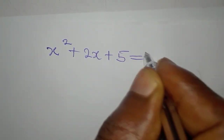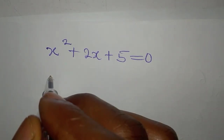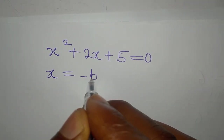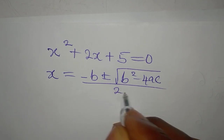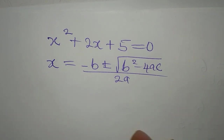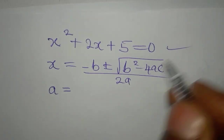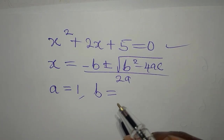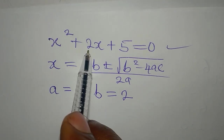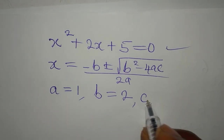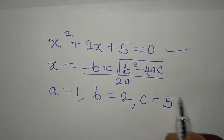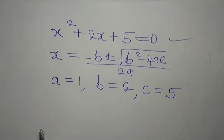For x squared plus 2x plus 5 equals 0, we'll use the quadratic formula: x equals negative b plus or minus the square root of b squared minus 4ac, all over 2a. Here a is 1 (coefficient of x squared), b is 2 (coefficient of x), and c is 5 (the constant).